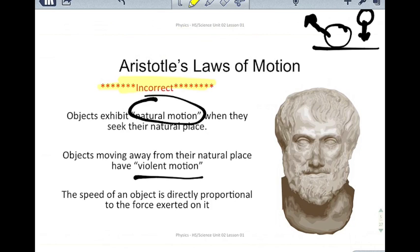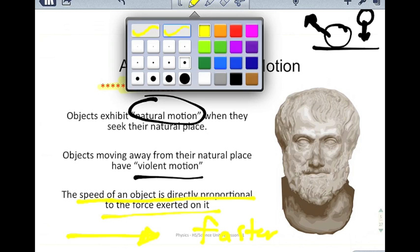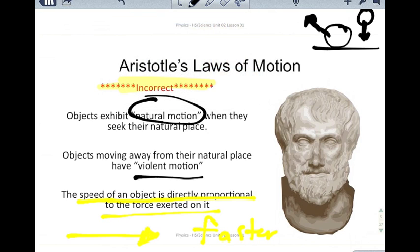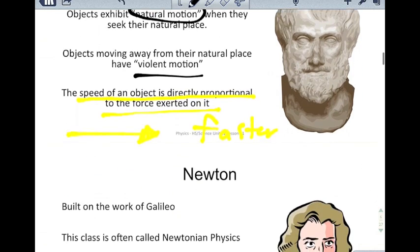The key idea from Aristotle is that the speed of an object is directly proportional to the force exerted on it — the more you push on an object, the faster it moves. That makes some sense: if you push something really hard, it moves faster than if you don't push it very much. Aristotle's ideas were around for almost 2,000 years as the most accurate way of looking at the world. But along comes Newton, who built on the work of Galileo — he was standing on the shoulders of giants.